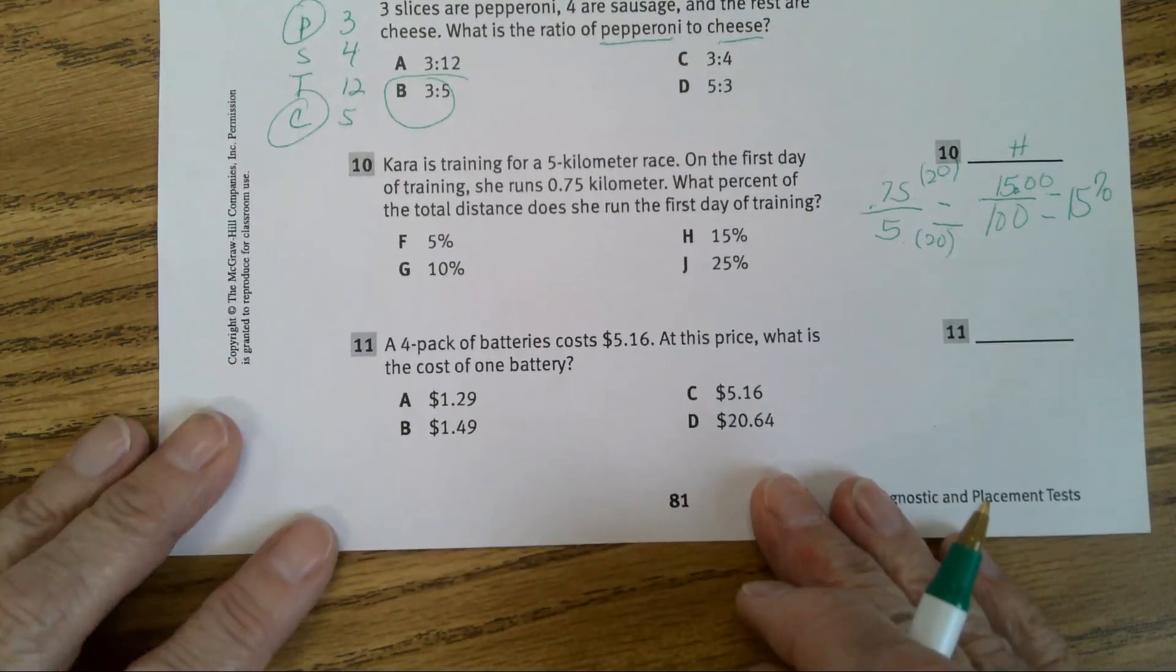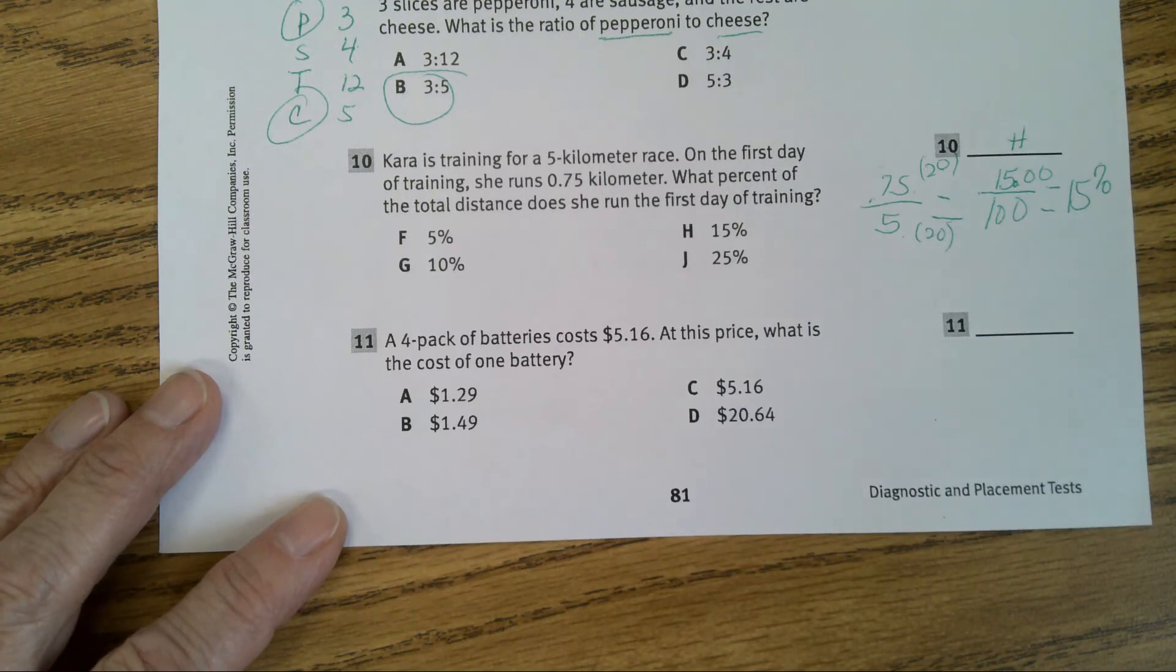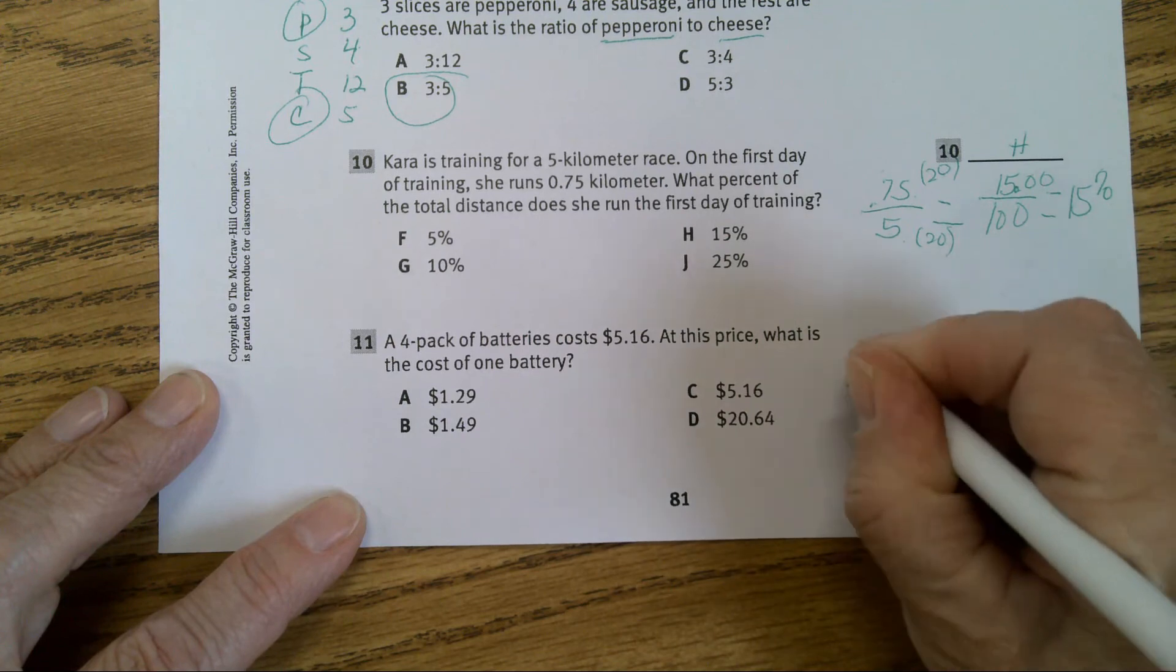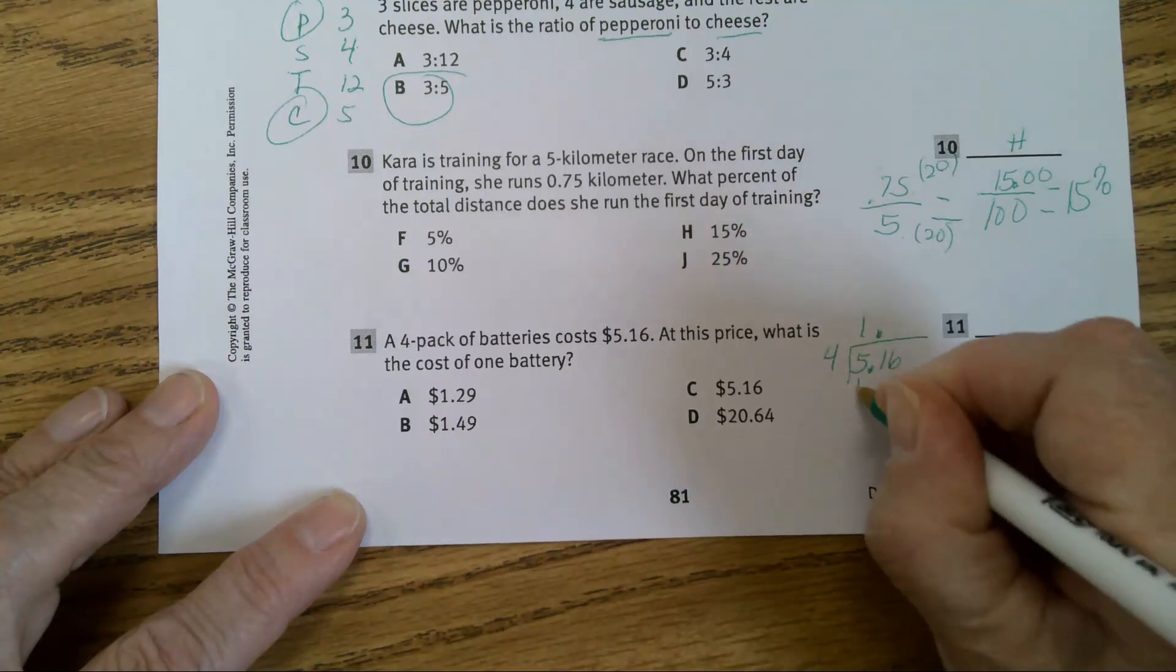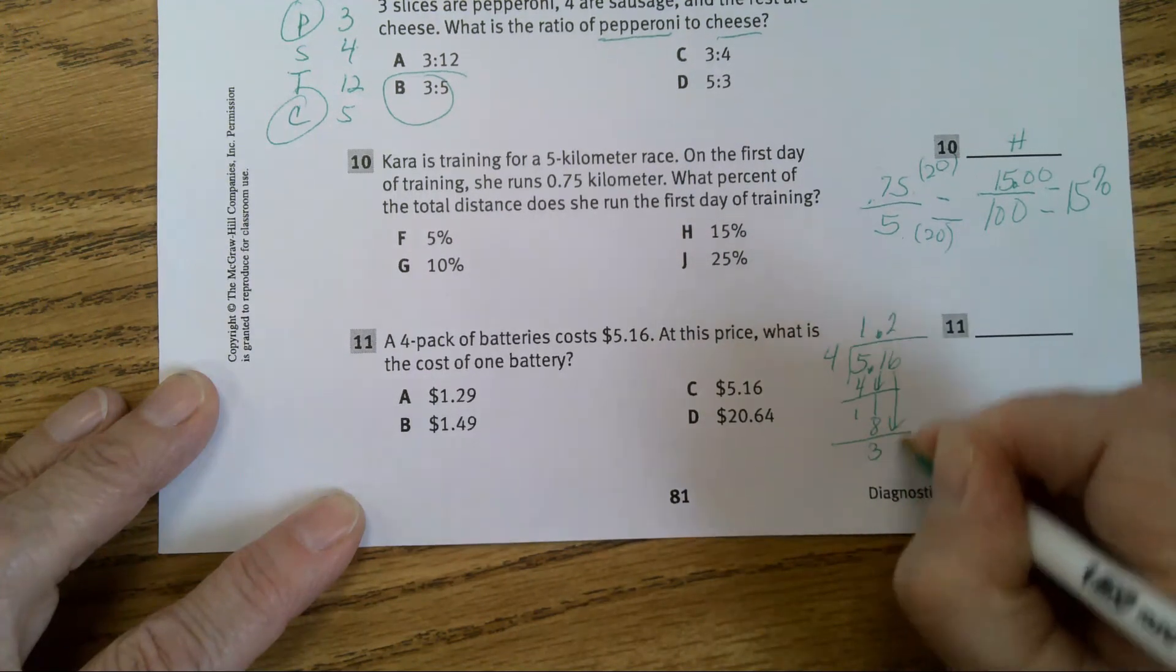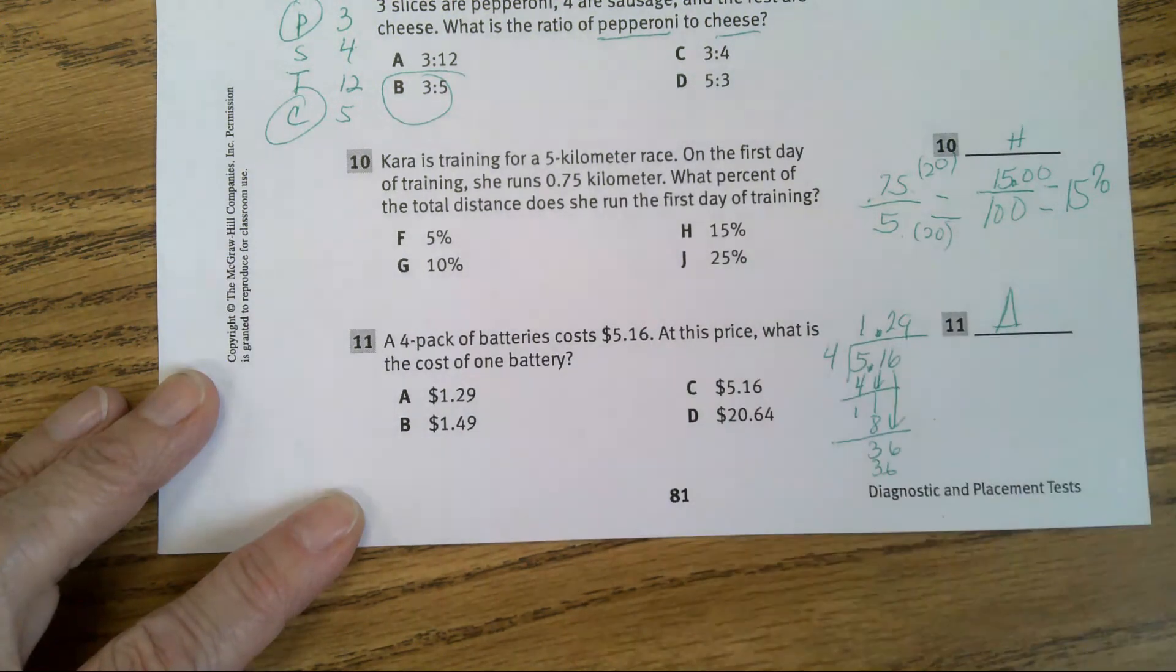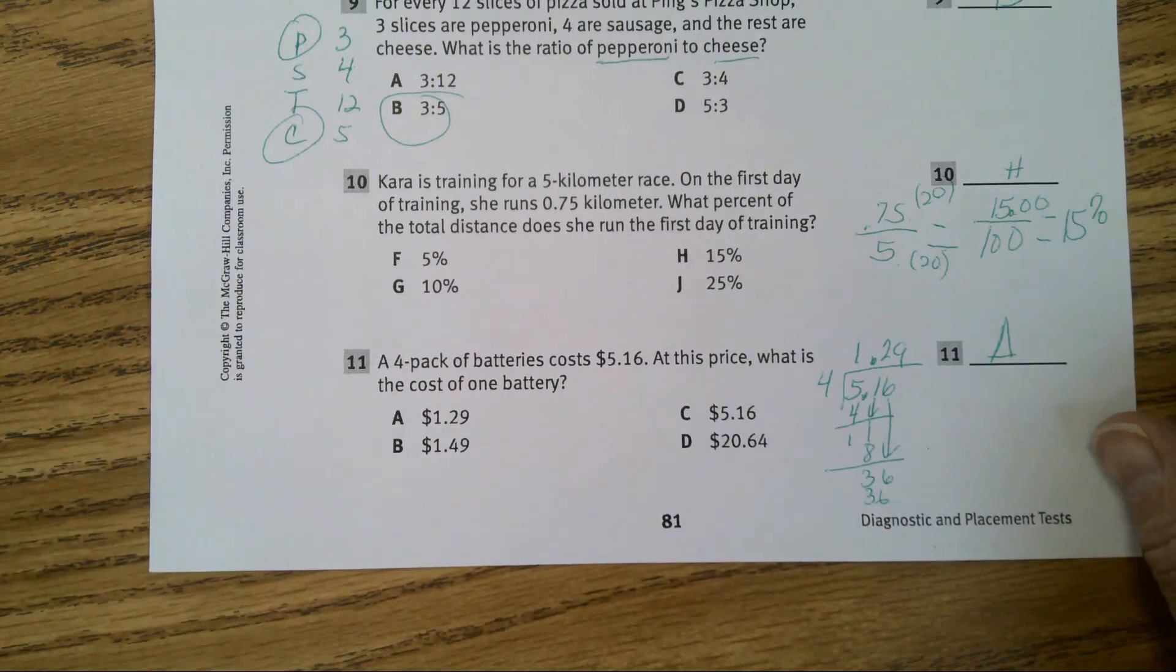Number 11, a 4 pack of batteries cost $5.16. At this price, what is the cost of one battery? You divide, you're going to find the unit rate. 5.16 divided by 4. Put your decimal point up, it goes into it once. Subtract, bring down, goes into it twice. 8, subtract, bring down. It's $1.29. Any questions on this?